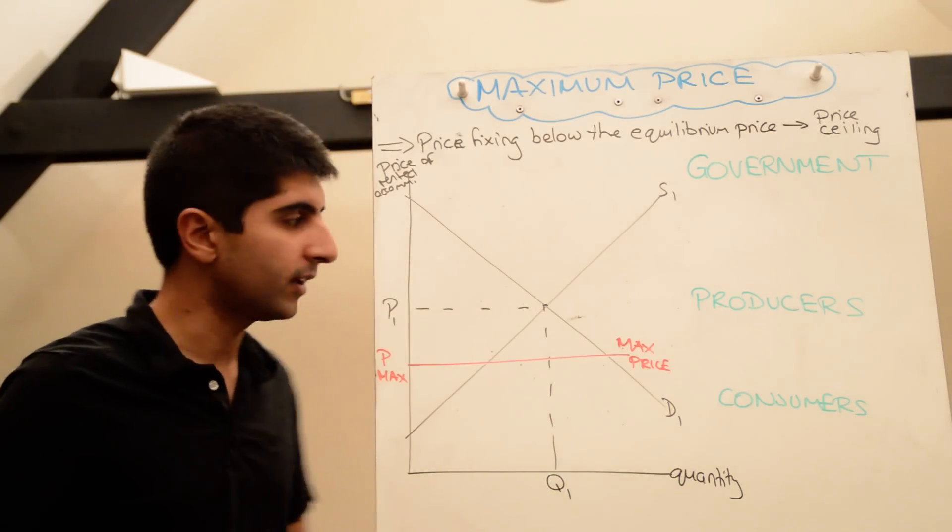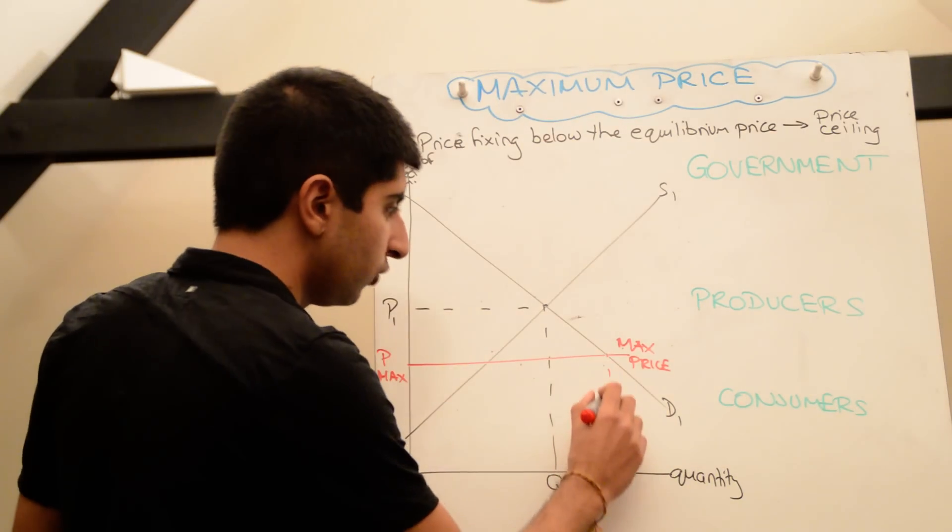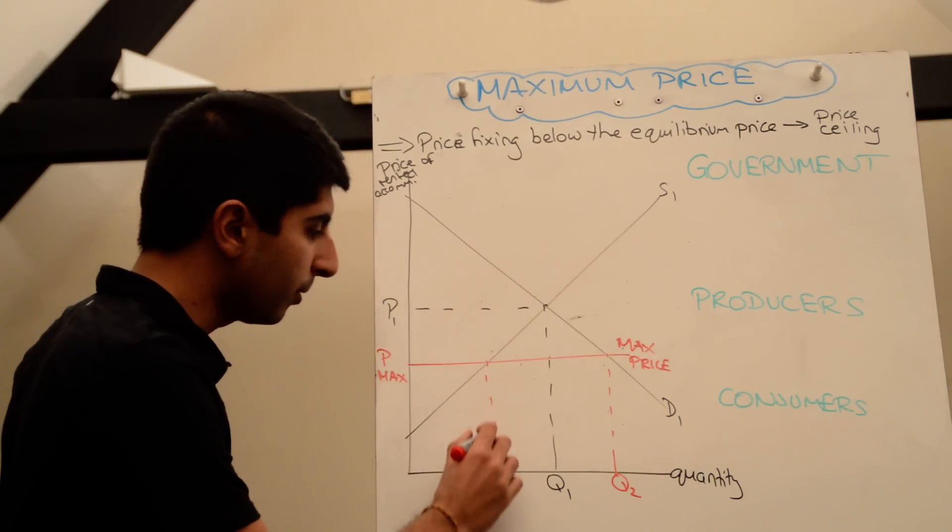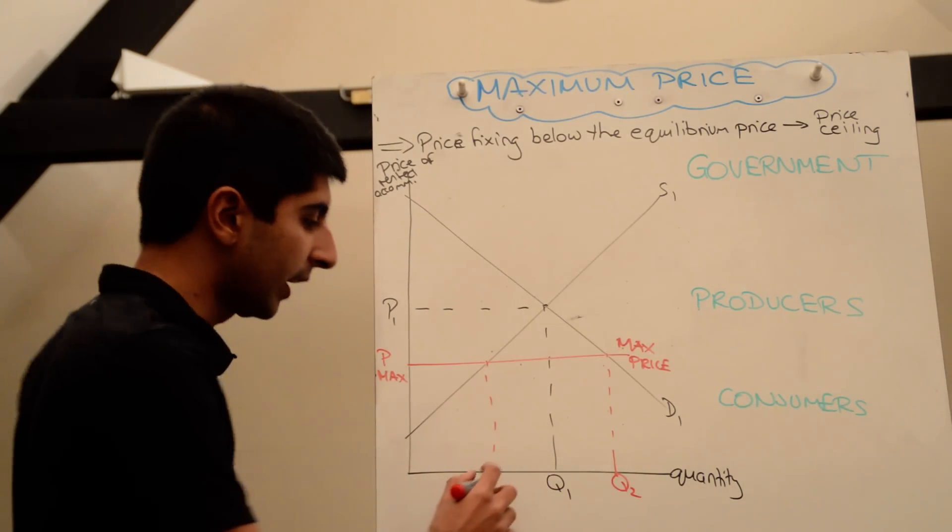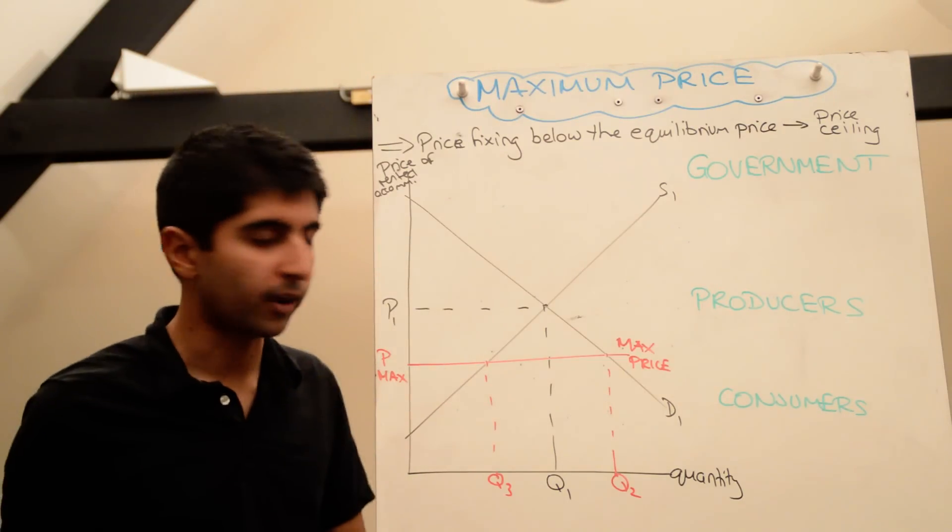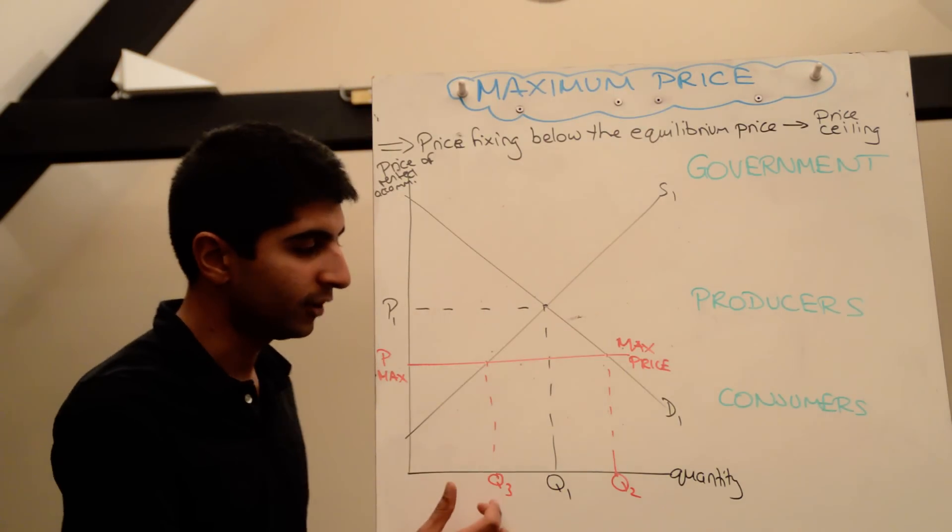Well, obviously demand is going to extend with a lower price. So consumers like it, that's the intention. So demand extends to Q2. Supply contracts. Suppliers of rented accommodation do not like it. They don't like the fact that they are only getting a lower price now, a much lower price. So they contract their supply to Q3.